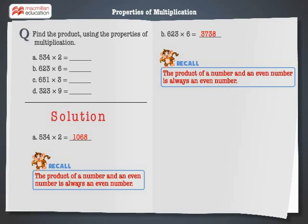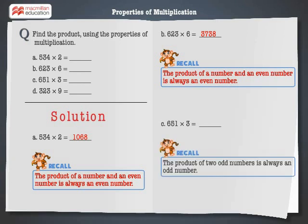Let's solve the next problem. 651 multiplied by 3 is equal to dash. Let's recall that the product of 2 odd numbers is always an odd number.